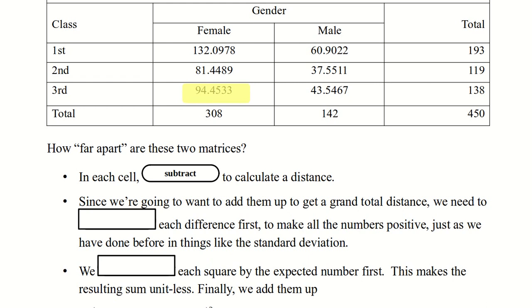Now again, we want to be able to add these up. And those differences could be positive or negative. So just like the standard deviation, we need to square each one first to make all the numbers positive. And finally, we want to make it unitless. That is, we don't want it to be talking about people. We just want it to be a number. But when we divide people by people, it becomes a unitless amount. And finally, we add them up.